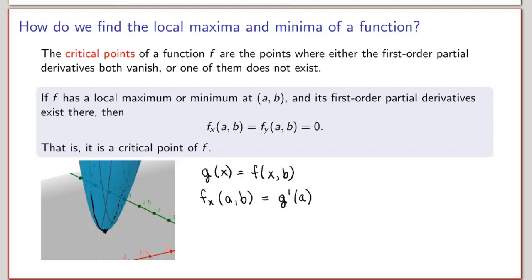The same is true for the partial derivative with respect to y. Here we consider a different curve corresponding to keeping x = a fixed on the surface. Again the point must be a local minimum for that curve as well, so the partial derivative with respect to y at (a, b) must also vanish.